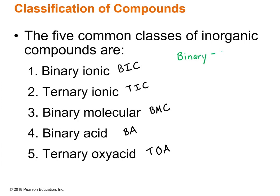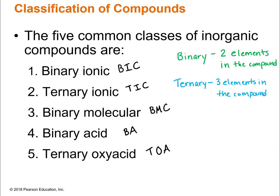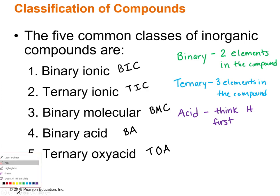Binary — wherever you see that, think two elements in the compound. Everywhere that you see ternary, think three elements. That will help you tremendously. And the last little tidbit: acid — think hydrogen first. Acids always start with their hydrogen first. Those are just a few tidbits; we're going to build from here.